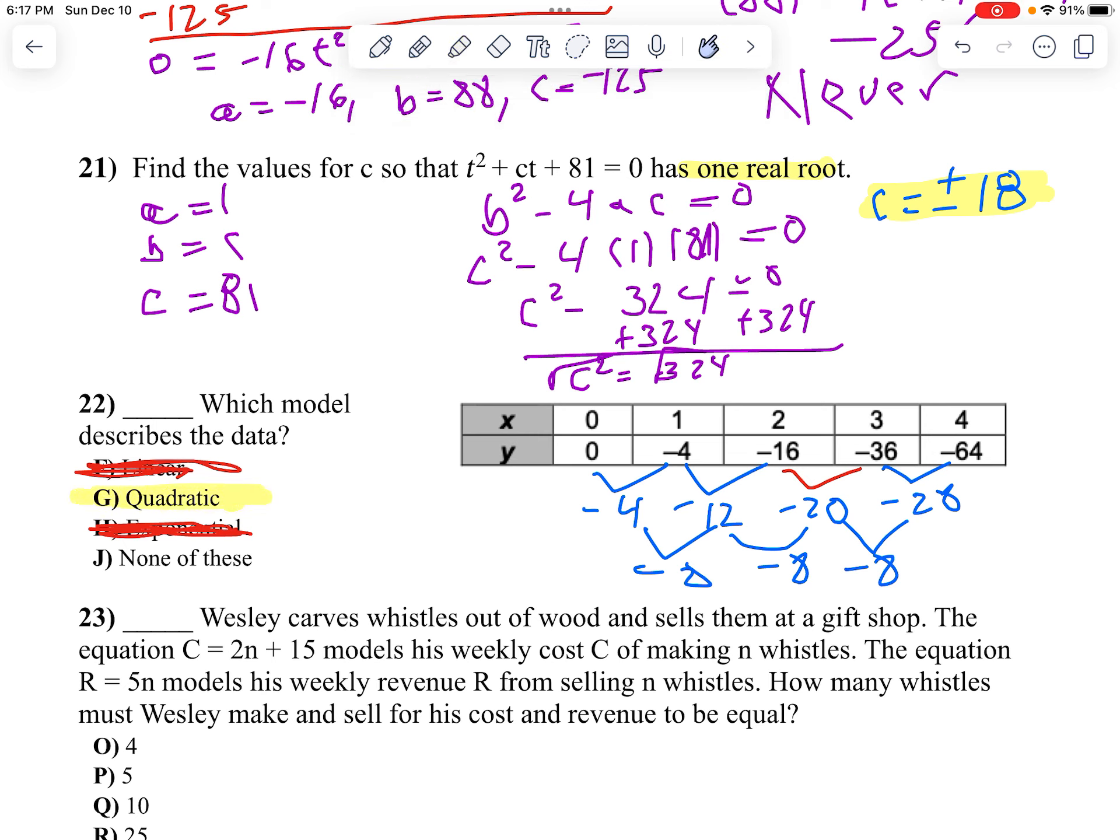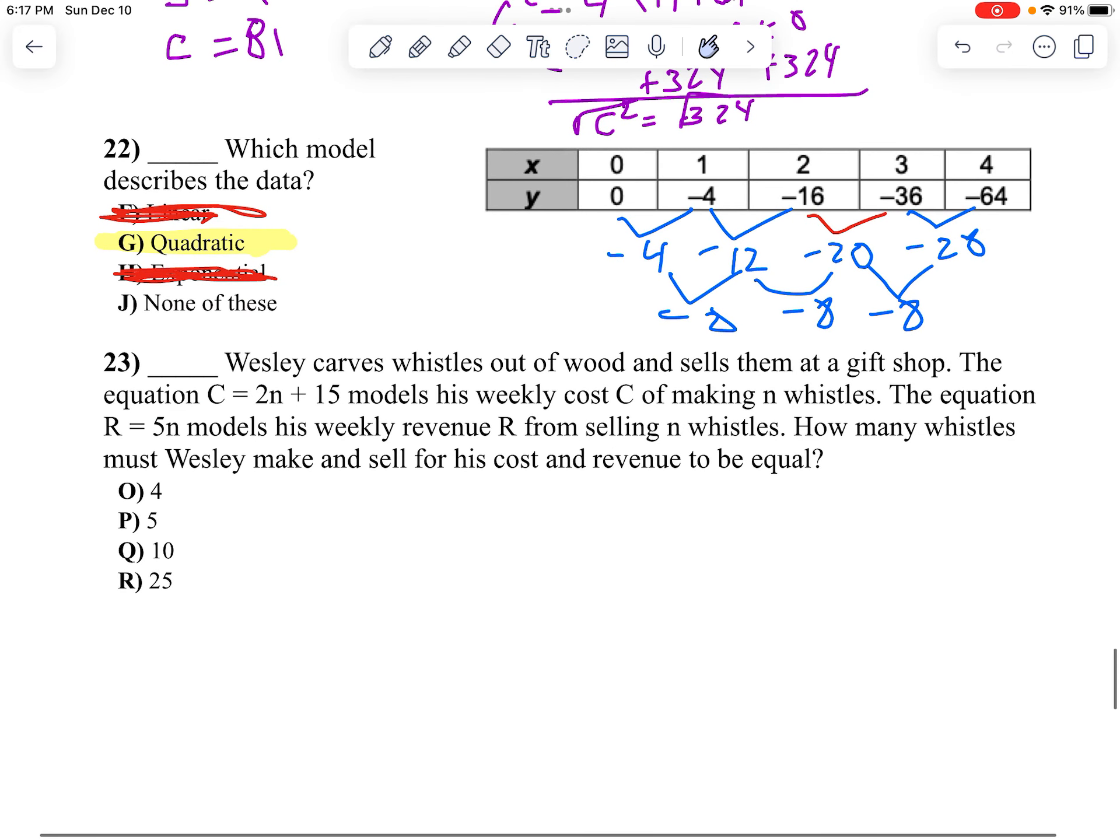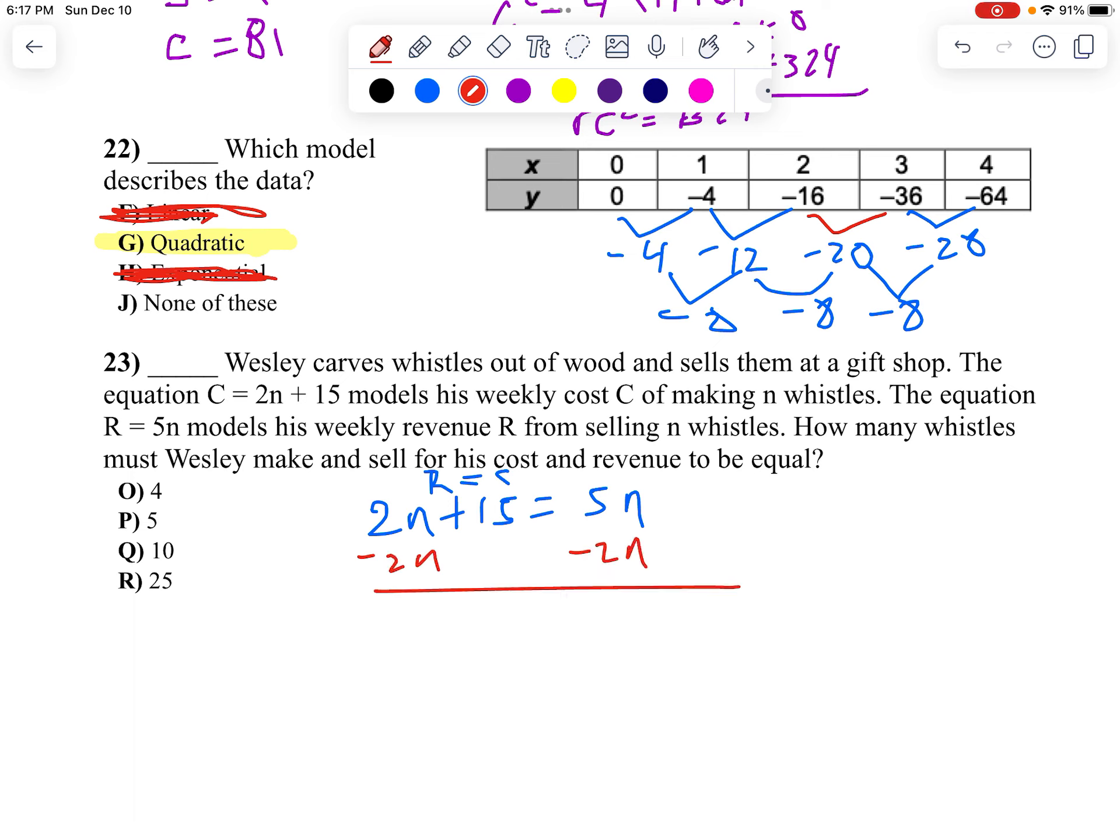Okay, and then question 23. I want to know when the cost and the revenue are the same. So we're going to say 2n plus 15 equals 5n, because I want the revenue and the cost to be the same. Well then, let's subtract 2n from both sides. And we get 15 equals 3n.